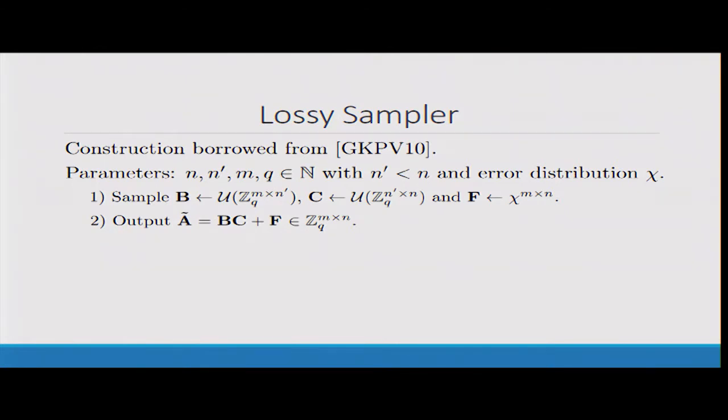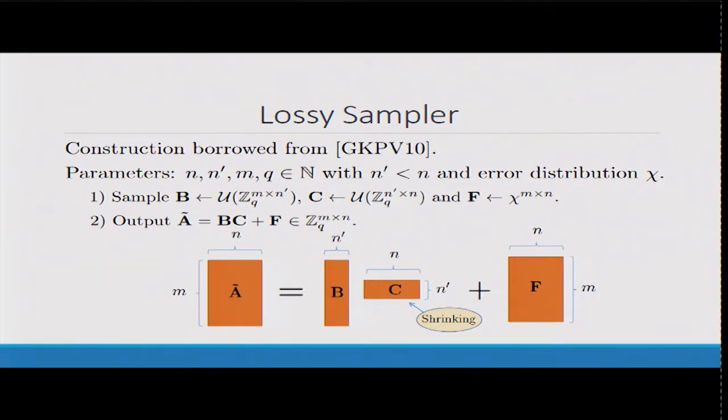It boils down to we need to have this lossy sampler. How do we do that? We borrow ideas from Gentry et al's paper, GKPV. We're gonna build our matrix A tilde essentially as a bunch of learning with errors samples themselves. You can think of C as a matrix of learning with errors secrets. B was what we formerly called the matrix A and F are just errors.